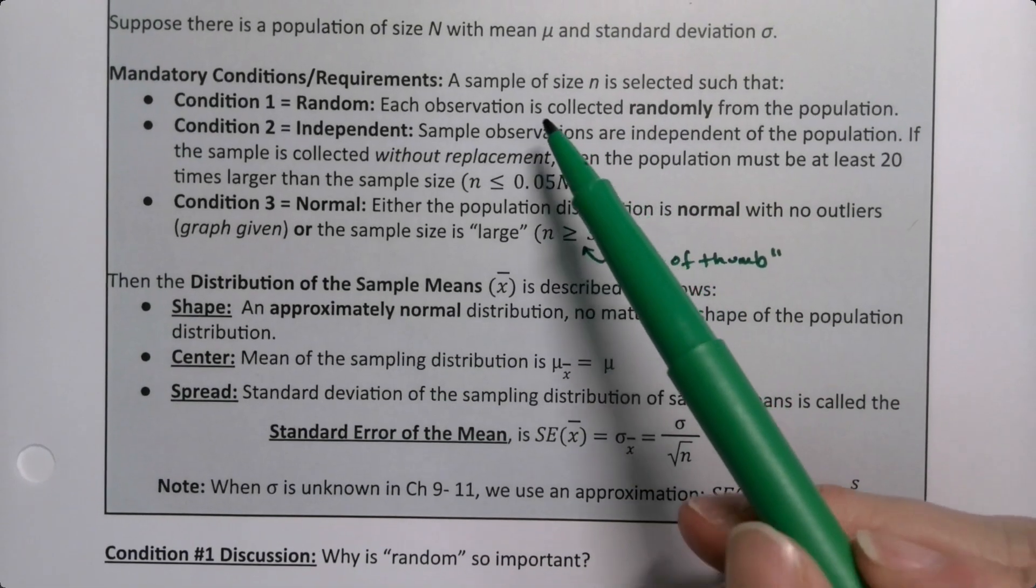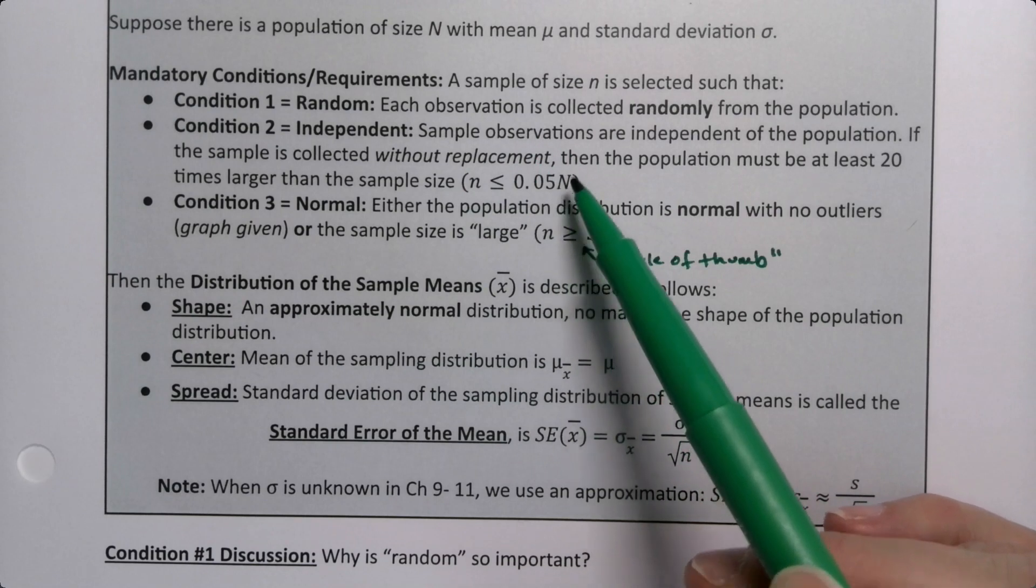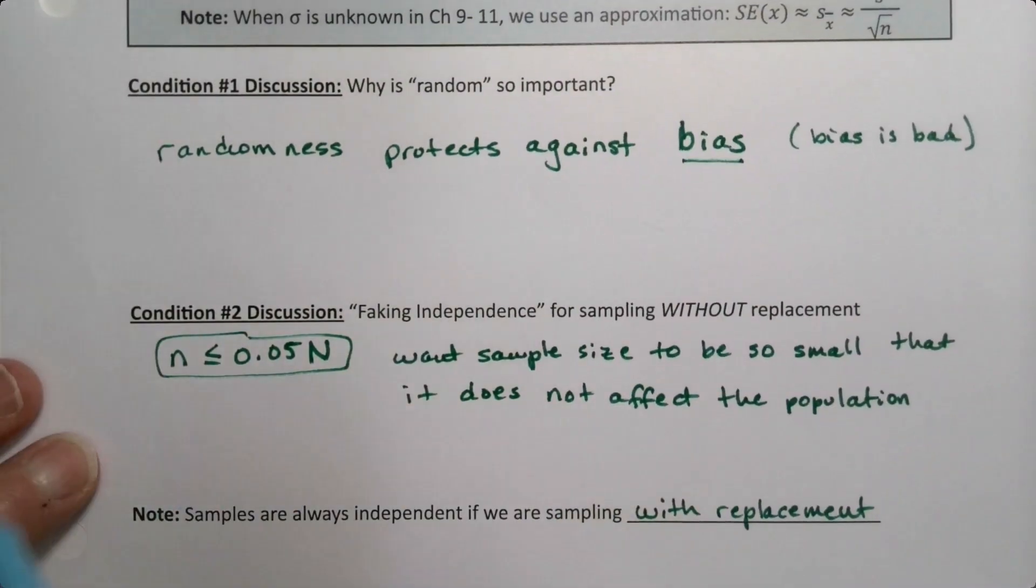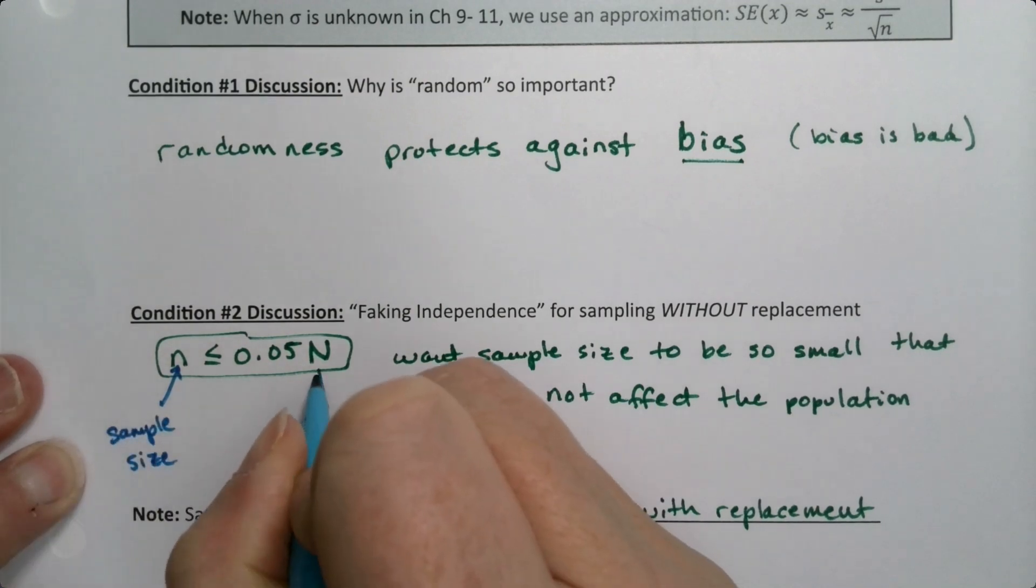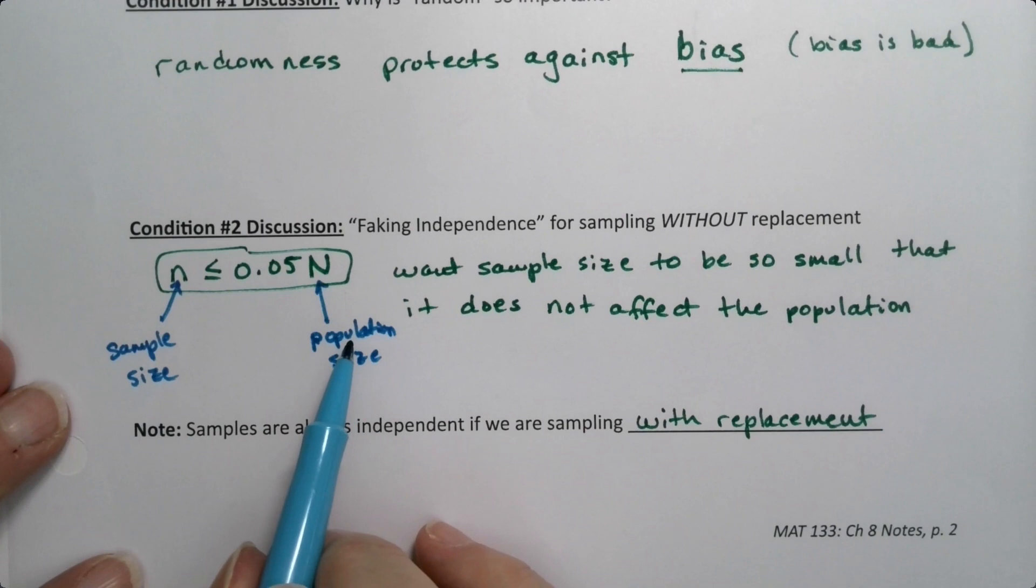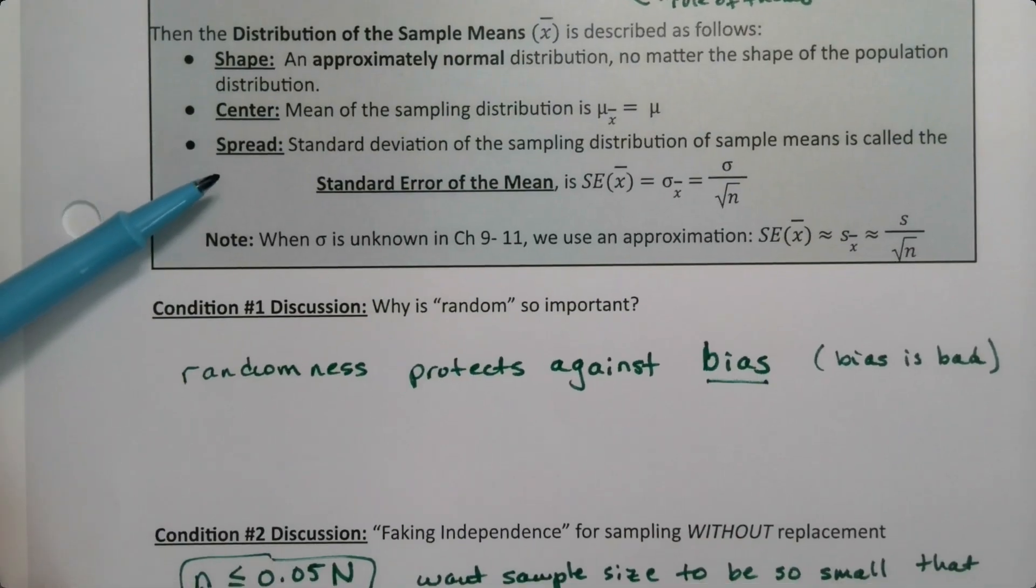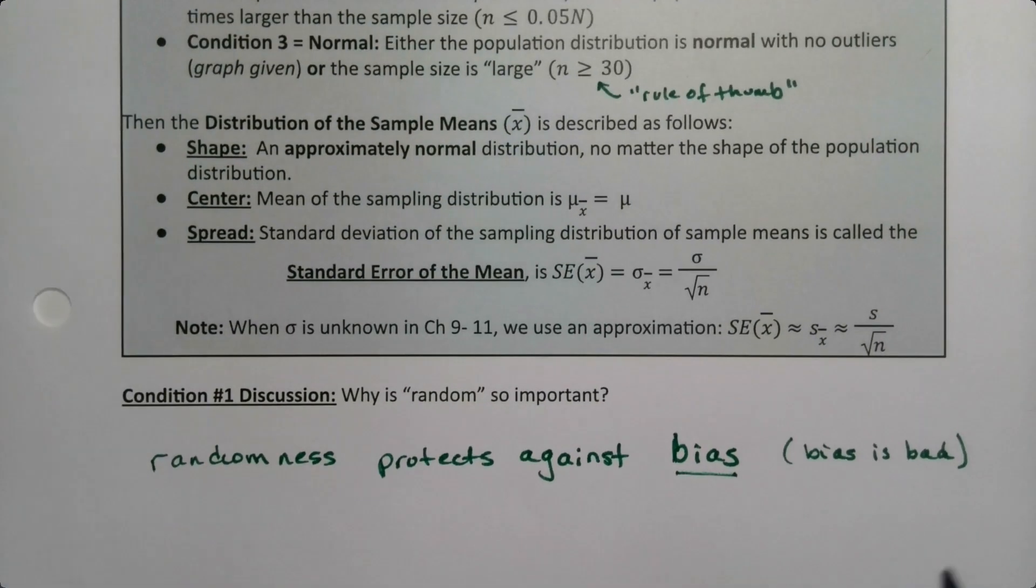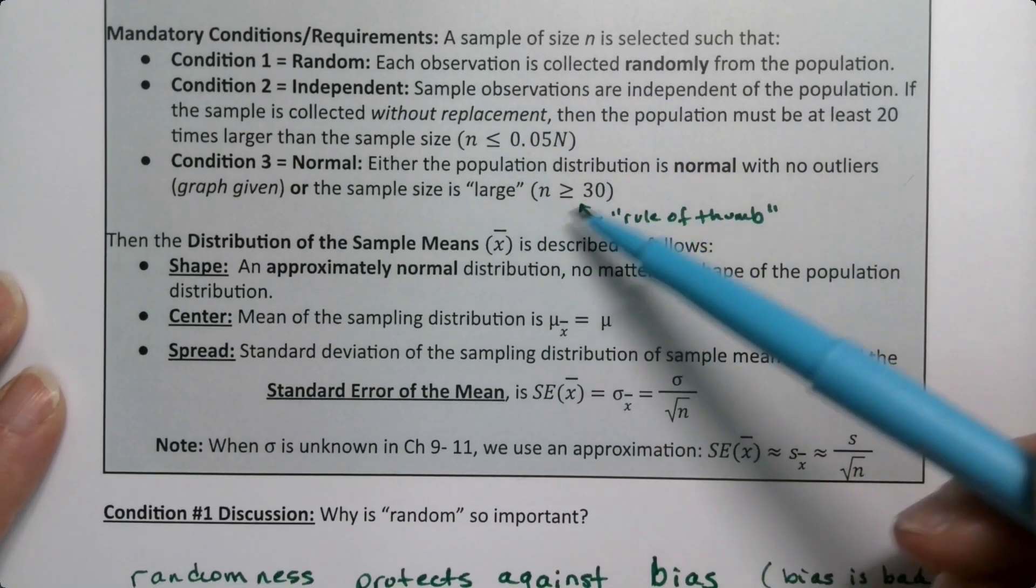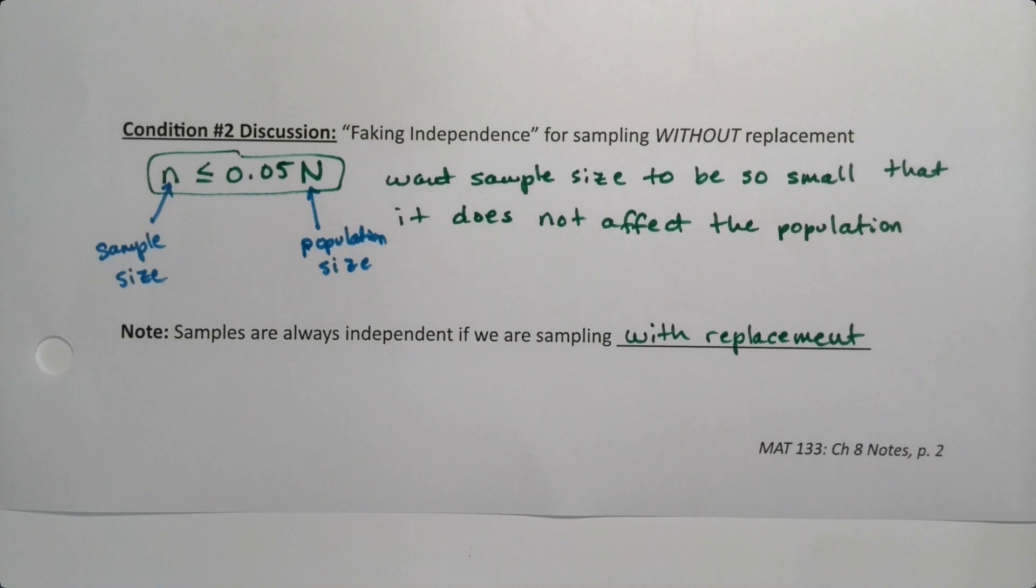So if these conditions are met, if it's random, if it's independent, which generally means your sample size is less than 5% of your population size - let me just relabel those. This is sample size, and this is the population size. If your sample size is less than 5% of your population size, but still bigger than 30, then you'll be normally shaped, you'll have a center that's what we expect, and a spread that's doing this. So as long as it's random, less than 5% of the population, but bigger than 30, these three things will be true, which is great for us, because then we can use that to solve problems.